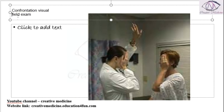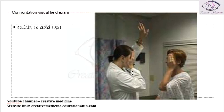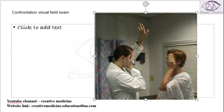First and foremost, you will ask the patient to close one eye, like the right eye. So if the patient closes the right eye, the examiner or doctor will also close the left eye — that is, the same side eyes are closed, or contralateral eyes are closed. So if the patient closes the right eye, the doctor closes his left eye.